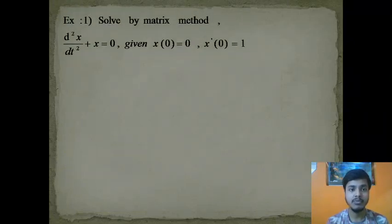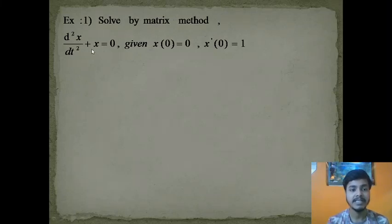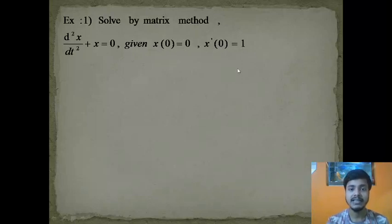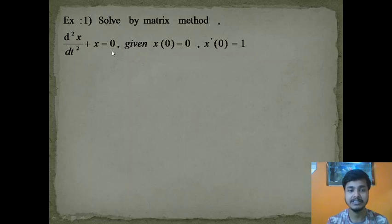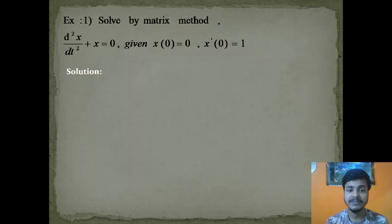Example number one says: solve by matrix method d²x/dt² + x = 0, given x(0) = 0 and x'(0) = 1. These are the initial conditions which will be very helpful in finding out the arbitrary constants. Let us see the solution.